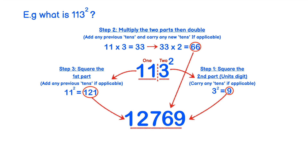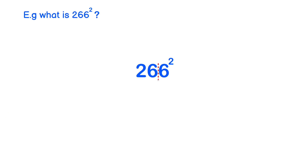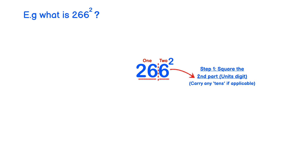Remember, this technique is to be used if you don't have a calculator to hand. Let's take a look at another example. What is 266 squared? We split the number up into two sections, section 1 and section 2. In step 1, we square the second part or the units digit and carry any tens if applicable. In this case we have 6 in the units part.